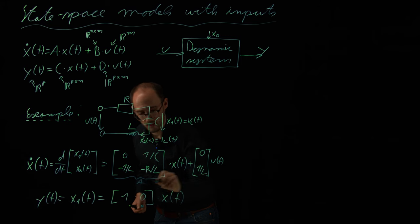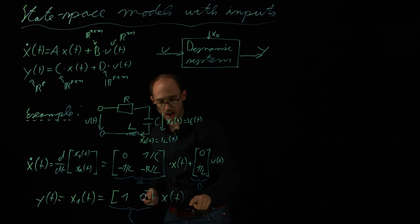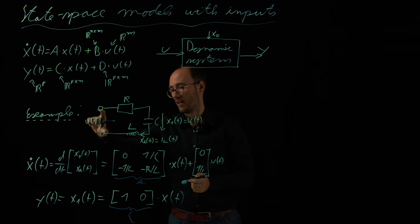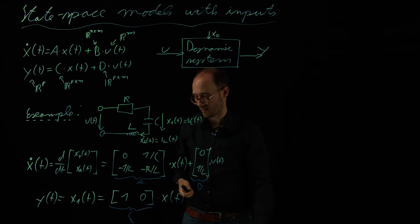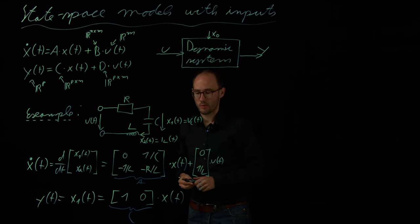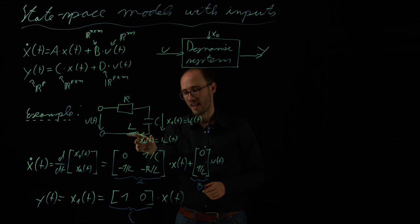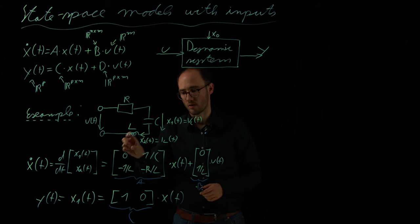So, this is A, this is B, this is C. And in this example, we do not have any feed through term because the input voltage here will not lead to a direct change, an instantaneous change of the measured voltage at the capacitor. So, in this example, what we basically have is a limited measurement. So, we only have direct access to the capacitor voltage and we do not have any direct access to the inductor current. So, this would basically be a state which from the measurement point of view is unknown to us. We do not have direct access to that.